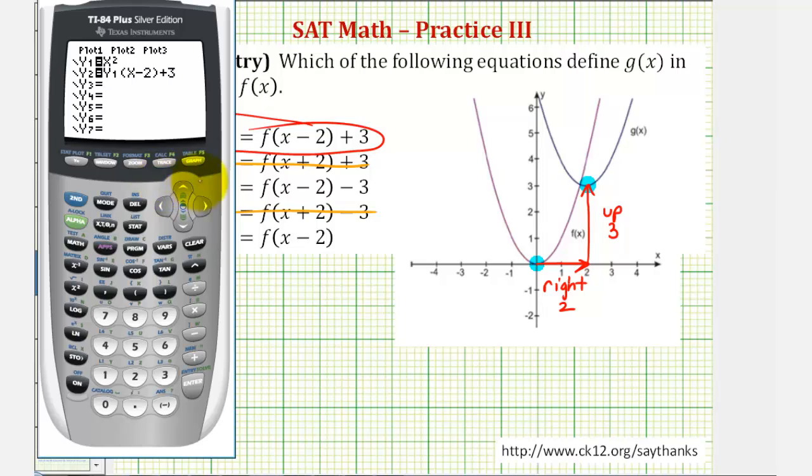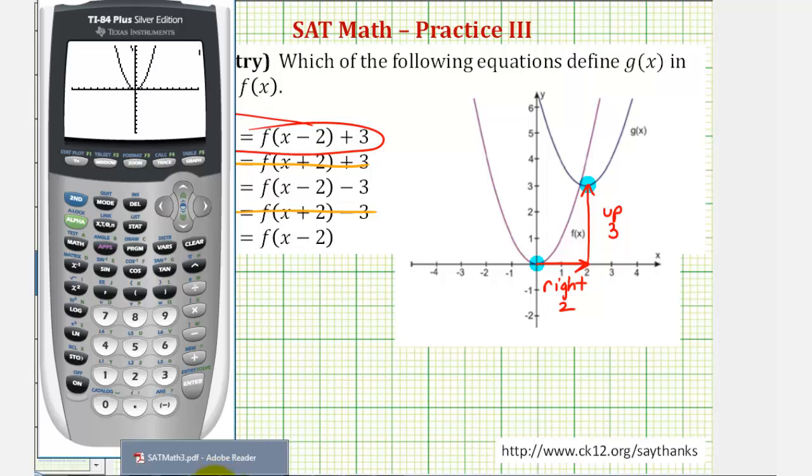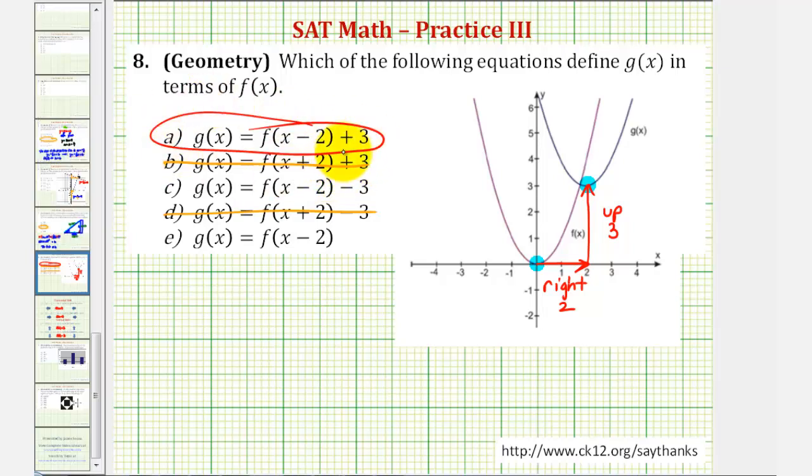To make sure we have the standard window, let's press zoom six. So there's y one, and there's y two. Notice how this graph does match the graph given, verifying that a is the correct answer.